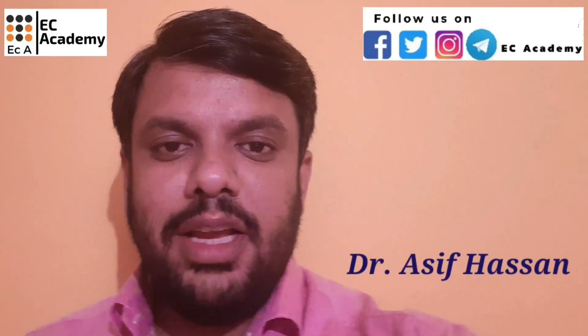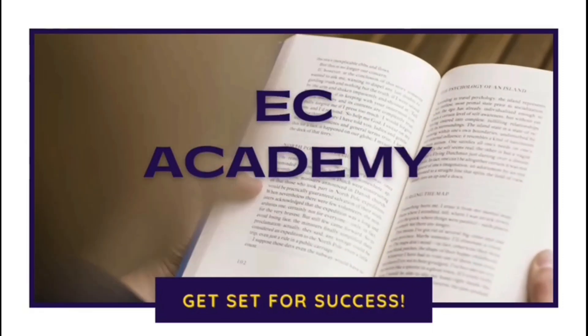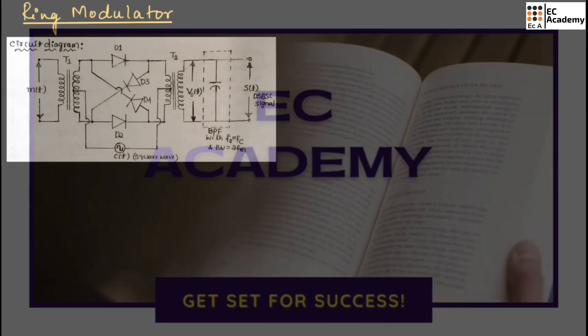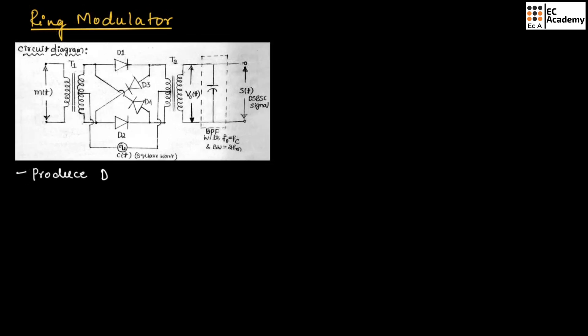Hello friends, welcome to ESEA Academy. In this lecture, let us understand ring modulator. Ring modulator is used to produce double sideband suppressed carrier (DSBSC) signal. This is the circuit diagram of ring modulator.